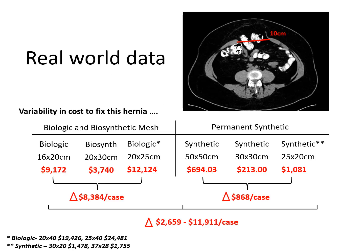I want to talk a little about real-world data. While cost is certainly not the primary outcome of any of these mesh products, and we have to focus on outcomes as well as quality of life, it would be remiss not to discuss cost. Here you can see a representative CT scan of what many of you probably see in your office — a ventral hernia repair with approximately an 8 to 10 centimeter defect, which can undergo many different ways of repair. The numbers I'm quoting are institution-specific, something we did as a deep dive for quality improvement in our intraoperative processes, and will vary by institution.